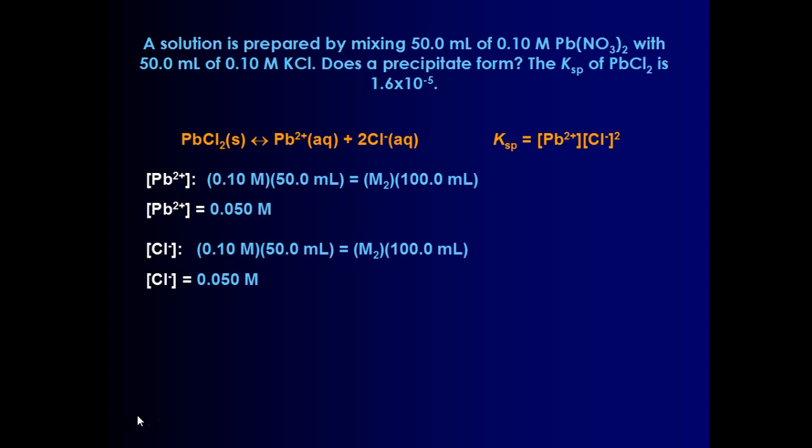I now know what the concentrations are of the lead and chlorine ions, and so I can substitute them into my K expression and solve for Q. I need to square the 0.05 for chlorine, and when I square it and multiply it by 0.05, or basically take 0.05 to the third, I get that the Q is 1.3 times 10 to the negative fourth. That Q is much bigger than your K value by a factor of 10, so a precipitate does indeed form. And this should be able to get you through the last worksheet in part 2 of Unit 6.